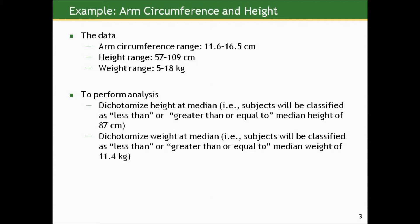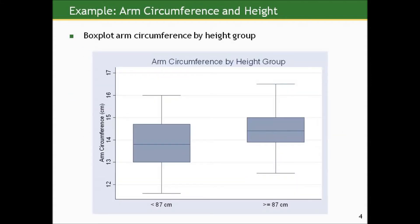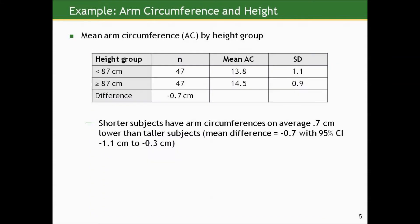We could do the same thing for weight. Let's take a look at the raw crude association between arm circumference and height with that grouping schema for height. Here's a box plot of arm circumferences by height group. Certainly, it's in line with what most of us would expect — the distribution of arm circumference shifts up for the taller children. The median is larger, as well as the 25th and 75th percentiles, for those who are taller compared to those who are shorter. There's a little more variation in the arm circumference values for the shorter height group.